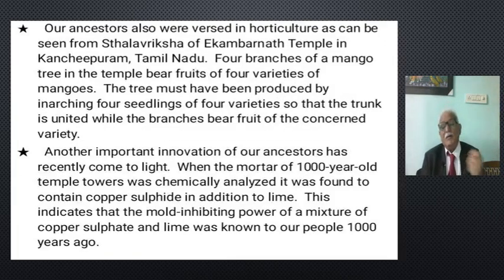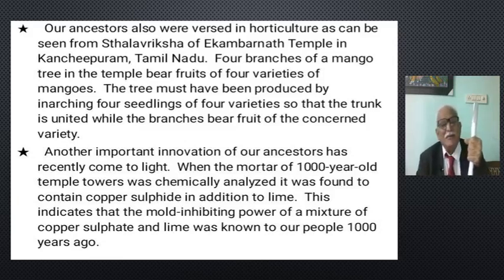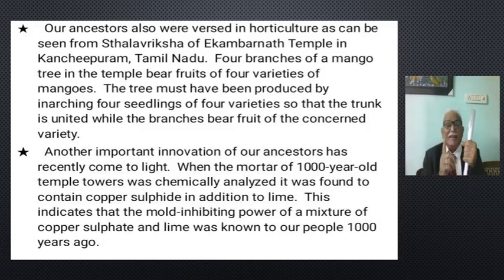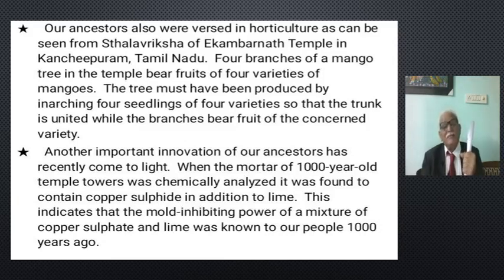Our ancestors were also well-versed in horticulture, as seen from the stone sculpture of the Akambarnath temple in Tamil Nadu. Four branches of a mango tree in the temple bear four varieties of mangoes. The tree must have been produced by inarching four seedlings of four varieties so that the trunk is united while the branches bear fruits of different varieties. This grafting technology was already present in ancient times — perhaps 10,000 BC or 12,000 years ago.